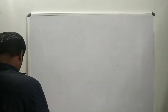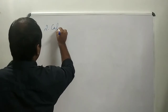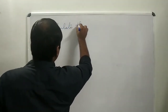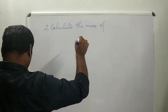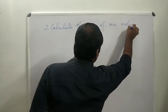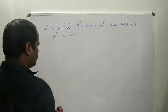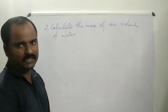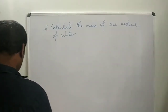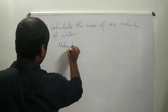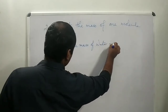The second question is: calculate the mass of one molecule of water. So we know that the molecular mass of water is equal to 18 grams.